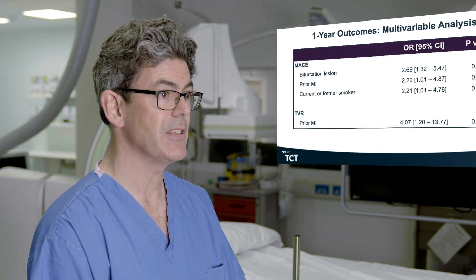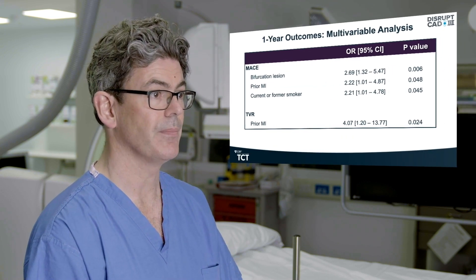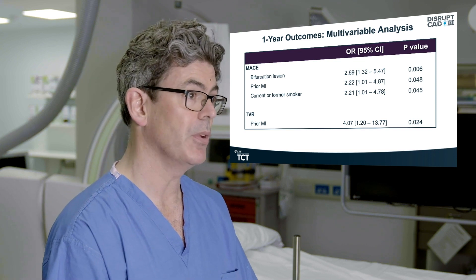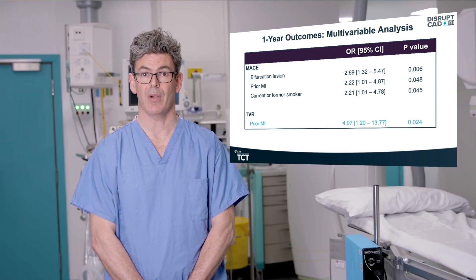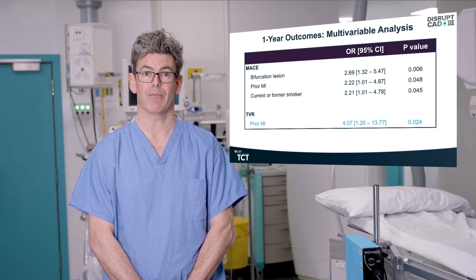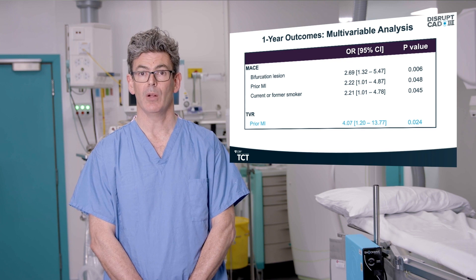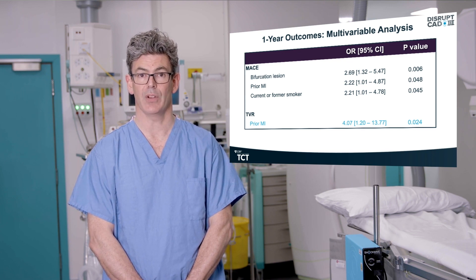The independent predictors of MACE and TVR are shown here. By multivariable analysis, bifurcation lesion, prior MI, and current or former smoker were significant predictors of MACE at one year, while prior MI was the only significant predictor of TVR at one year.